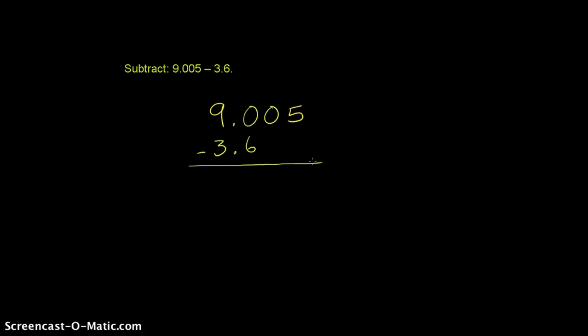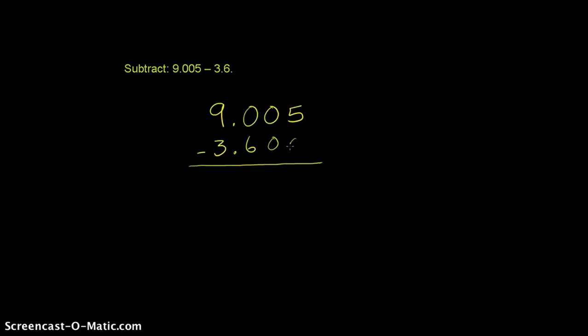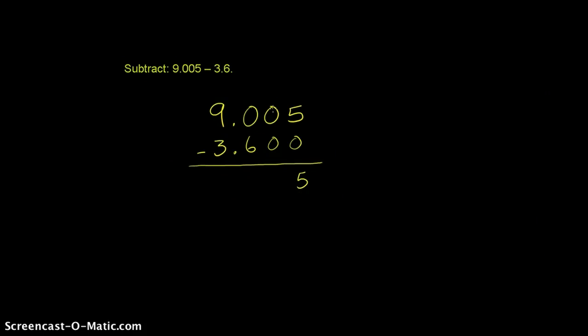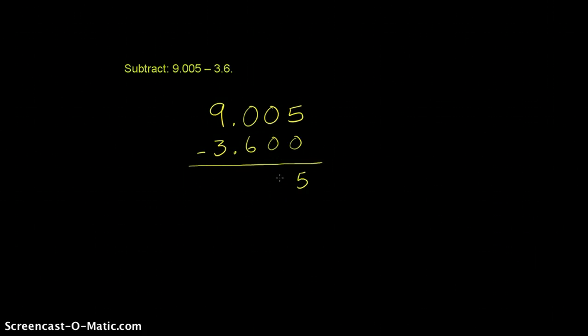So now we can subtract. We start up here. We have 5 minus nothing. You can imagine this 3.6 we could add two zeros right here, and it would be the same thing as 3 and 600 thousandths, which is the same thing as 6 tenths. 5 minus 0 is nothing, and you just write a 5 right there. Then you have 0 minus 0, which is just 0. And then you have a 0 minus 6.